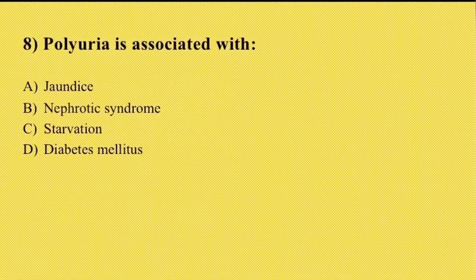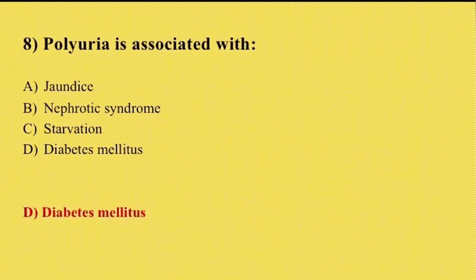Eighth question: polyuria is associated with option A jaundice, option B nephrotic syndrome, option C starvation, option D diabetes mellitus. The correct answer is option D, diabetes mellitus. Other symptoms include excessive thirst, excessive urination, fatigue, weight loss, and blurred vision. In some cases no symptoms may appear.